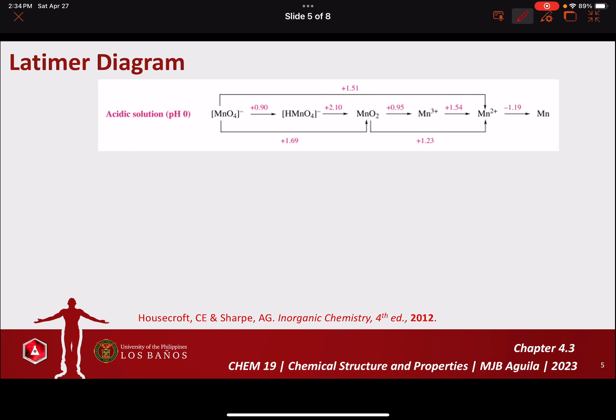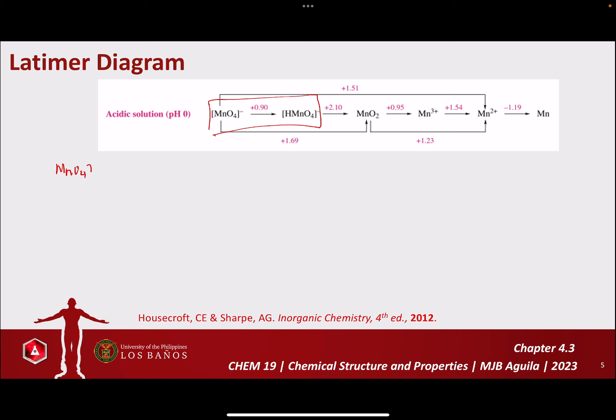Given that the Latimer Diagram is a reduction potential diagram, we can actually derive the reduction half-reactions that describe the reduction of the species. For example, based on the Latimer Diagram, MnO4²⁻ to HMnO4⁻ has a potential of 0.9 V. But this is not yet the complete reduction half-reaction because hydrogen is not balanced and there is no electron written in the equation.